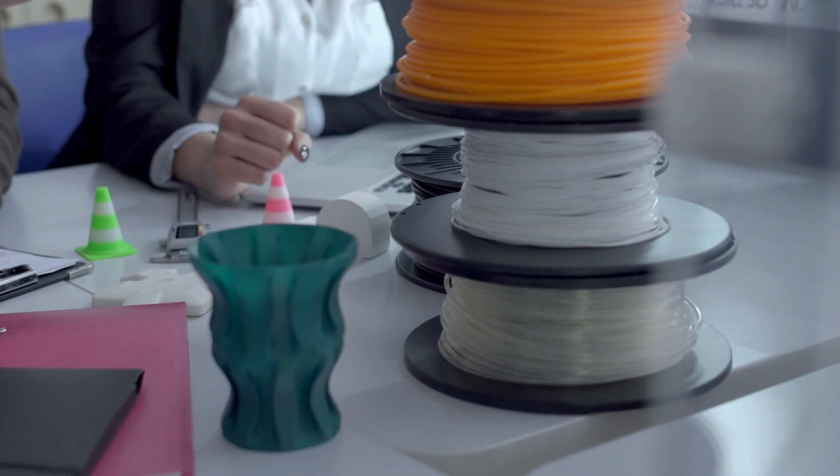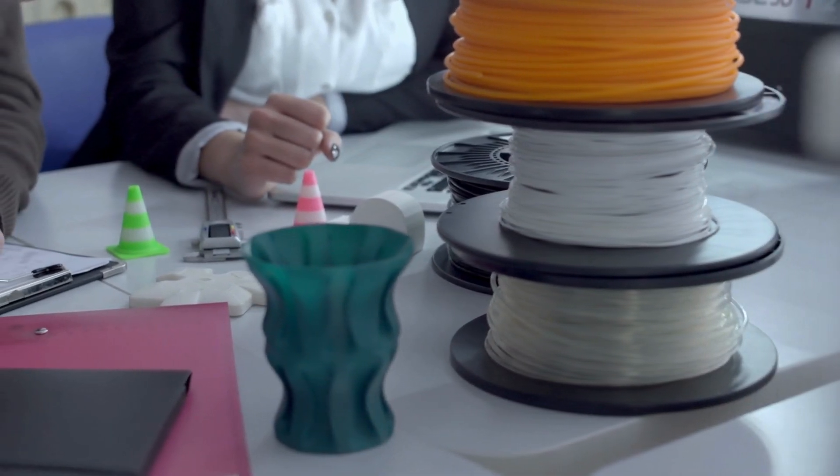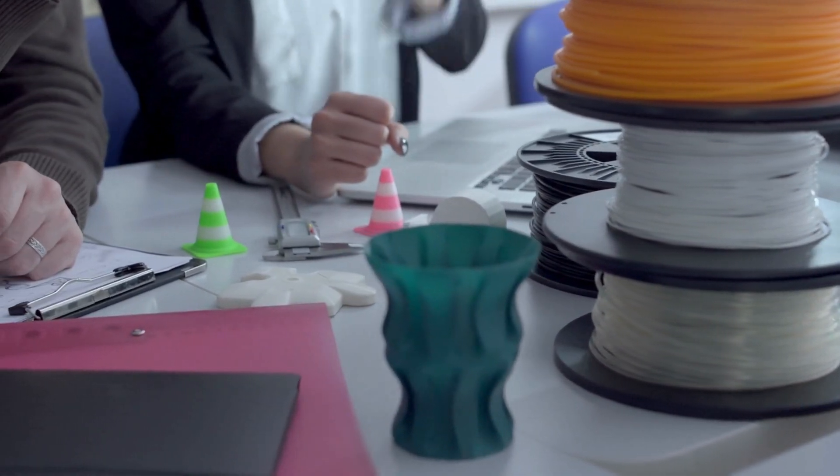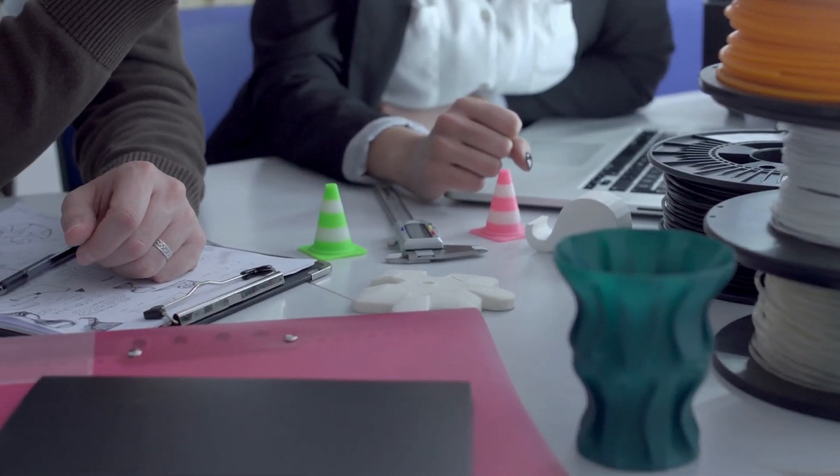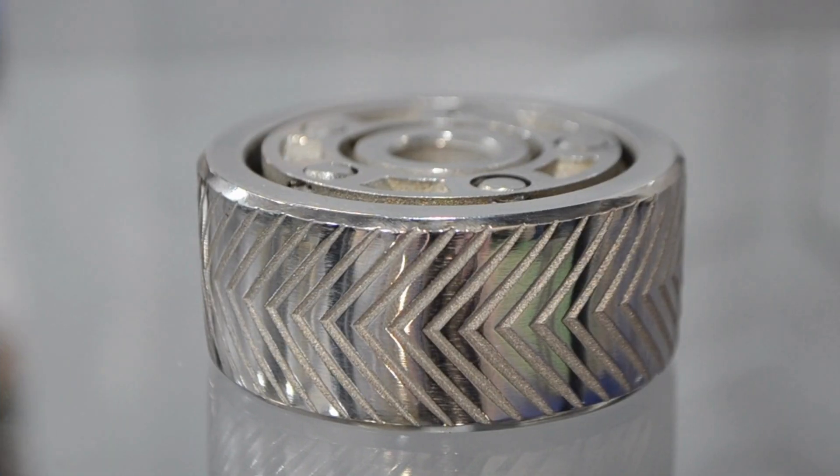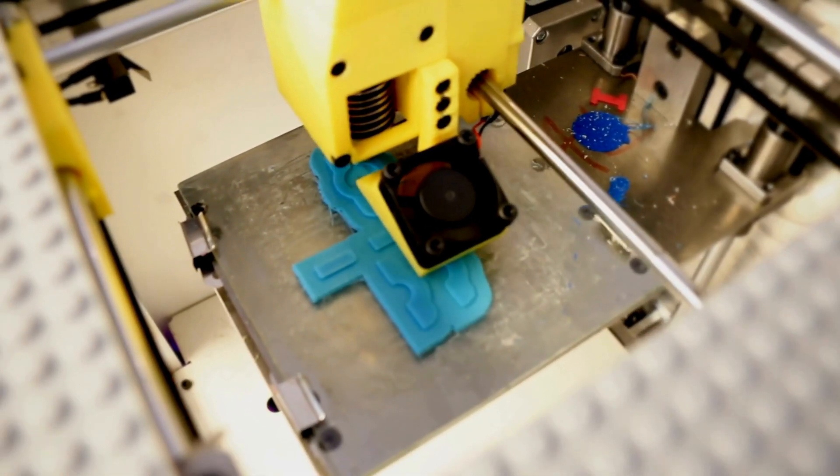Filament printers are generally more affordable and easier to use than resin printers. They can print a wide variety of materials such as PLA, ABS, PETG, nylon, wood, metal, and flexible filaments. They can also print larger and more durable objects, which are suitable for functional or mechanical purposes.